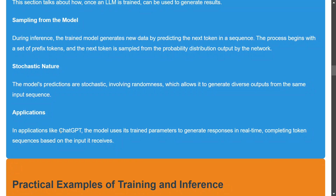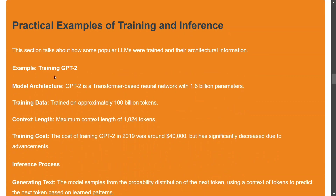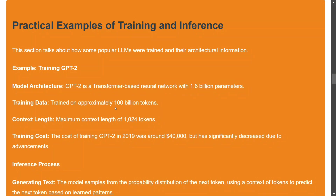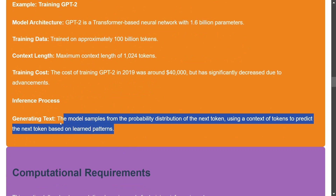This gives us applications like ChatGPT, which uses trained parameters to generate responses in real time. As a practical example, GPT-2 is a transformer-based neural network with 1.6 billion parameters trained on about 100 billion tokens, with a context length of 1024 tokens. The cost of training GPT-2 in 2019 was $40,000 but has since dropped significantly — Karpathy mentioned it's now around $600.